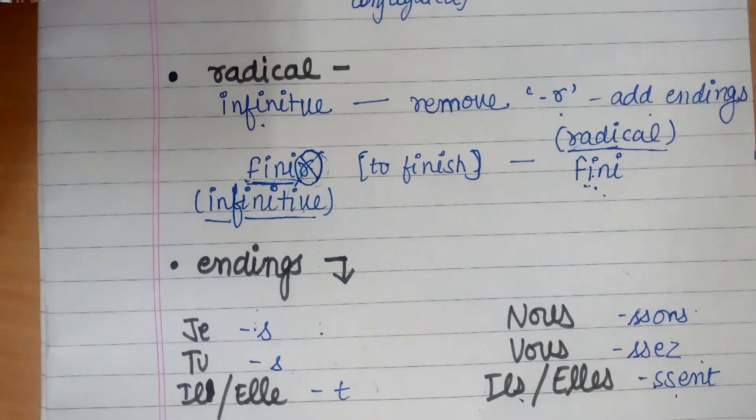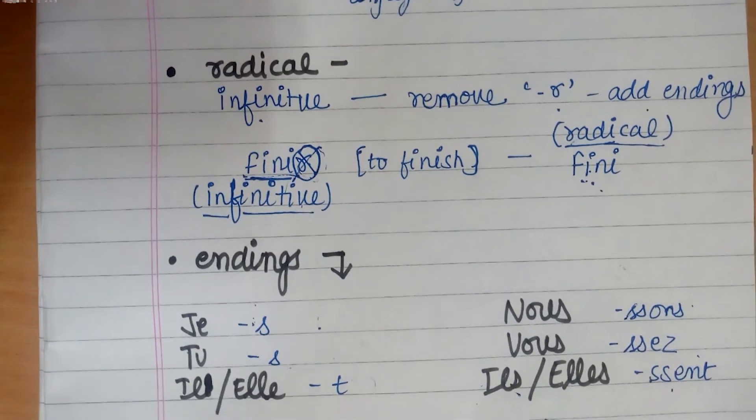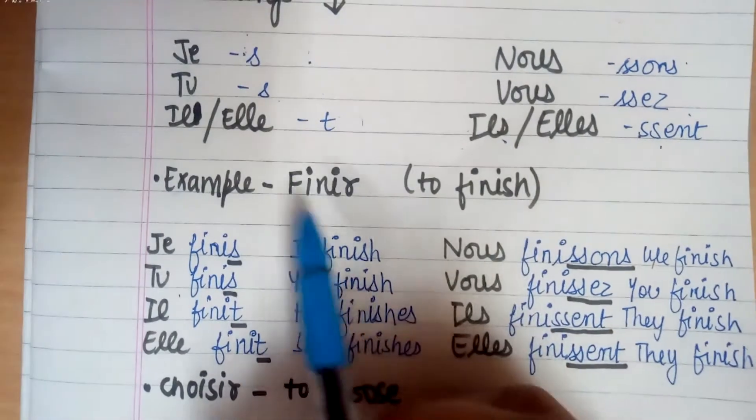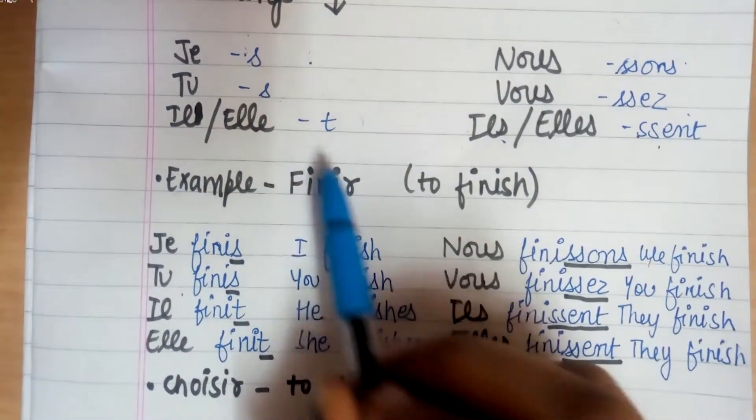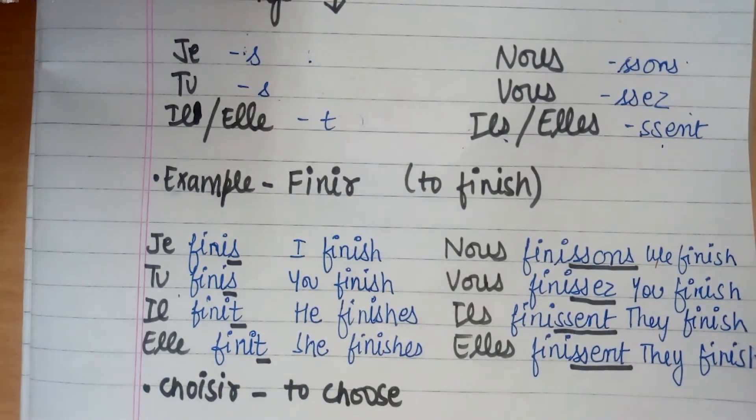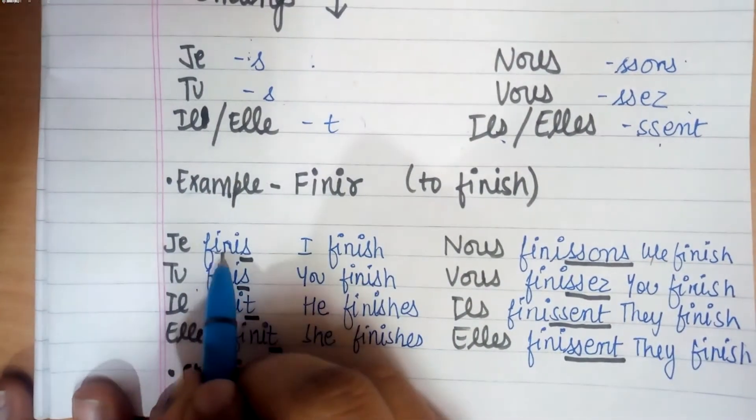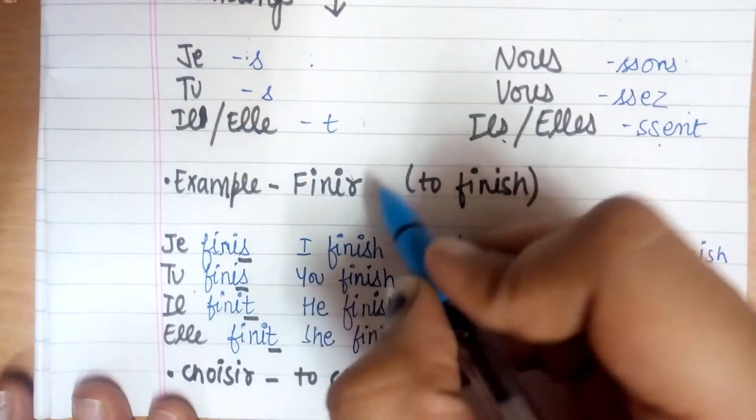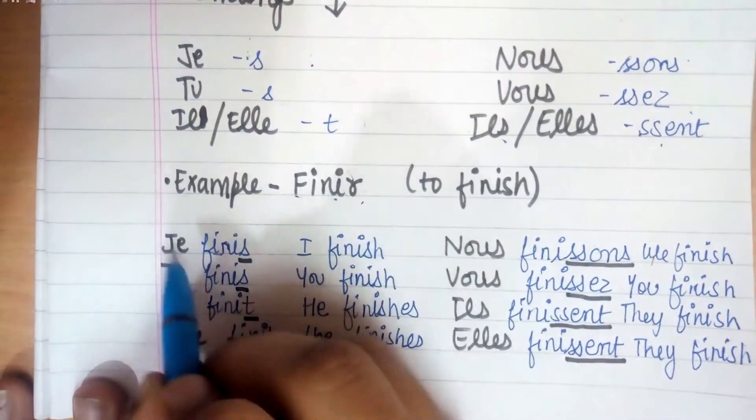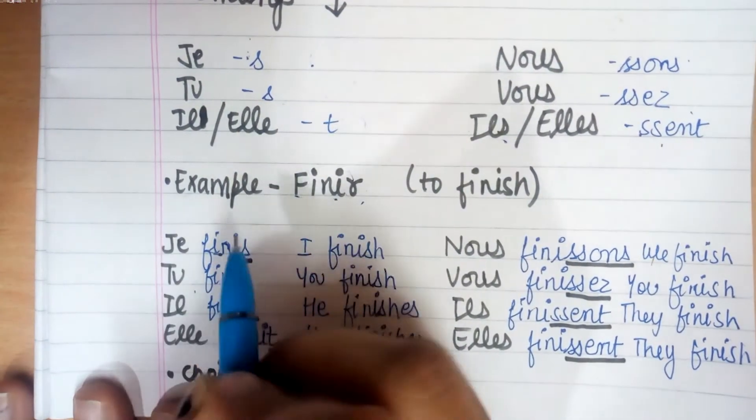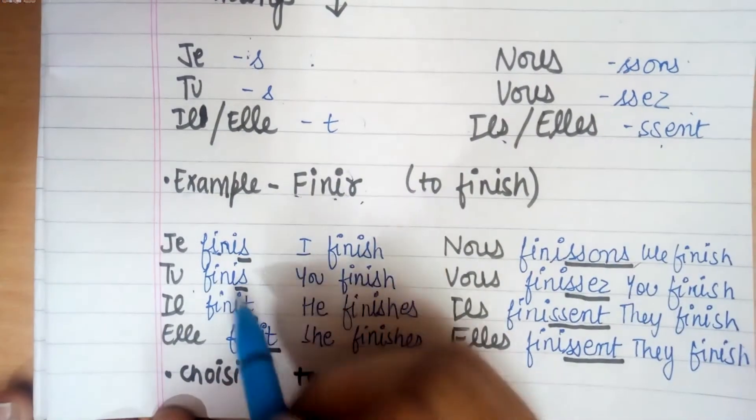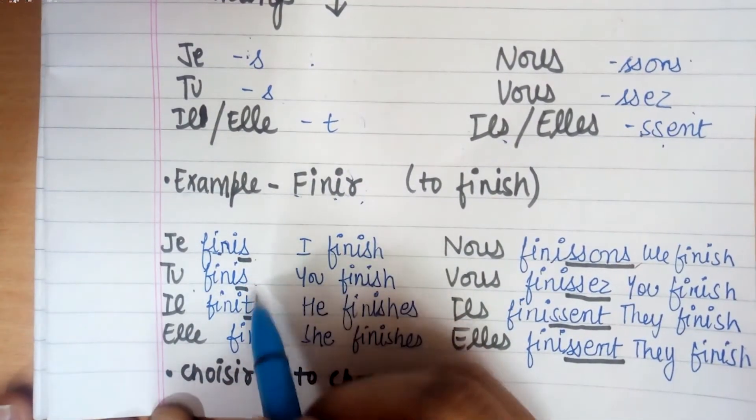Let's take an example, the verb finir which means to finish. We'll get the radical - first of all we'll remove the IR from this infinitive to get the radical. We've written finir and then we've added the endings: S, S, T, S-S-O-N-S, S-S-E-Z, S-S-E-N-T.